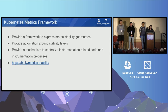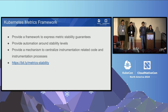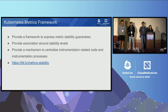This led to establishing a metrics framework that SIG Instrumentation came up with, which provided a way to express metric stability guarantees. This allowed us to have some automation around metrics so that developers contributing to Kubernetes metrics would not introduce breaking changes that could cause monitoring breakages for users. The Kubernetes metrics framework also gave us a mechanism to centralize instrumentation-related code changes.